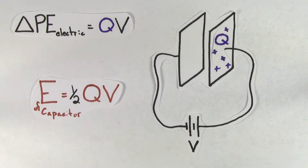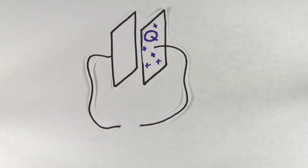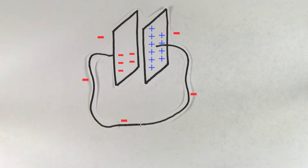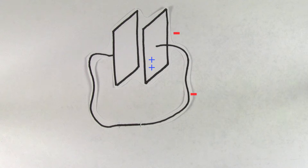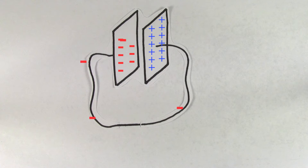Where does this one half come from? How come the energy is not just Q times V? Well, the energy of a capacitor would be Q times V if during discharge, all of the charges were to drop through the total initial voltage V. But during discharge, all of the charges won't drop through the total voltage V. In fact, only the first charge that gets transferred is going to drop through the total initial voltage V.